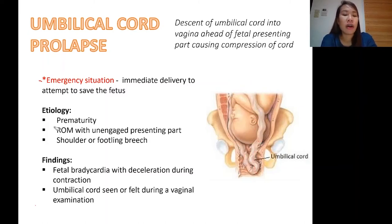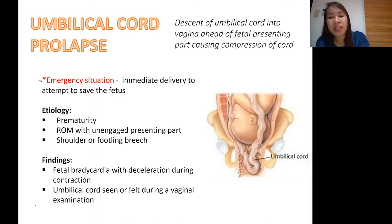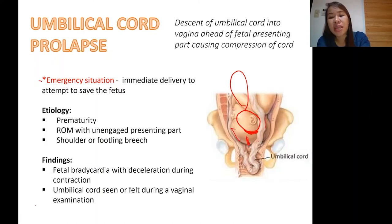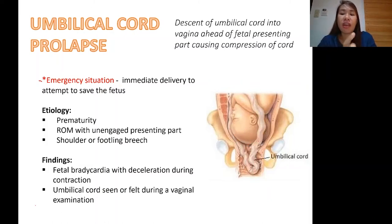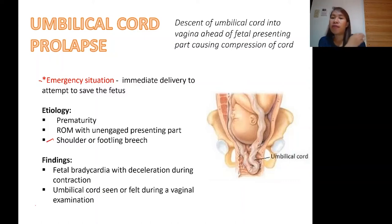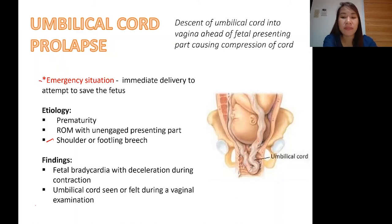Next is rupture of membranes with an unengaged presenting part. The bag of waters has ruptured, but the head is not yet engaged — meaning the head of the baby is still high up. There is a lot of space for the umbilical cord to prolapse, and once the membranes rupture, there is no longer a cushioning effect. Another cause is shoulder or footling breech presentation. If the shoulder or foot is the presenting part, there is space in between where the cord can prolapse.